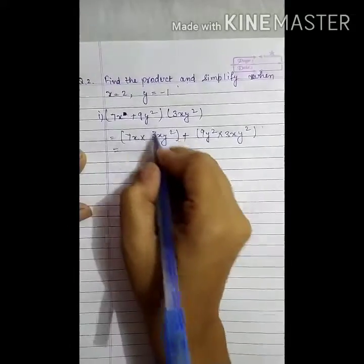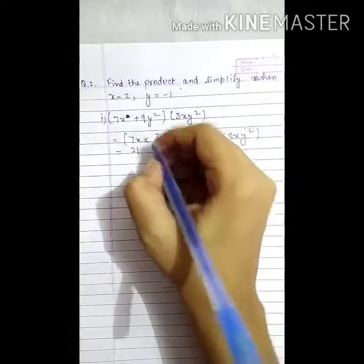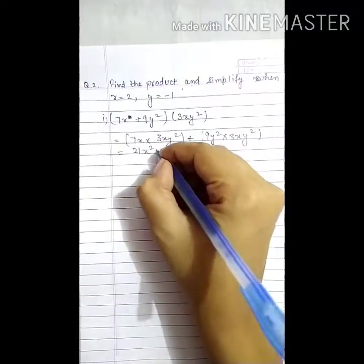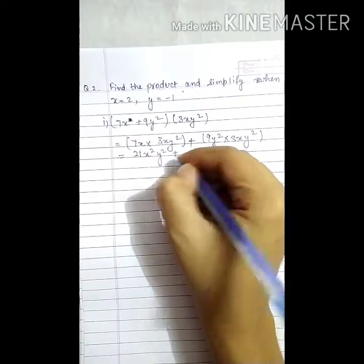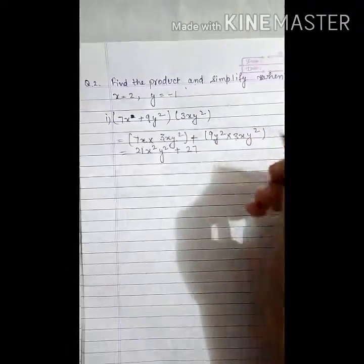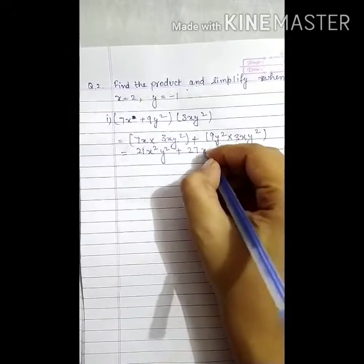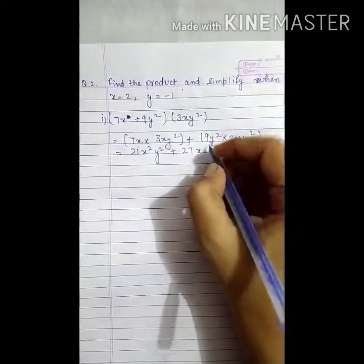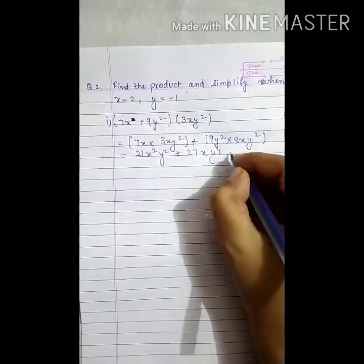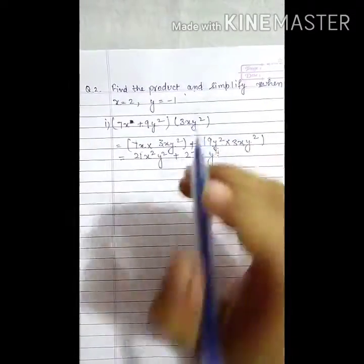7 threes are 21. X multiplied by x is x squared, times y squared. Plus 9 threes are 27, and y squared multiplied by y squared is y to the power 4. So this is the product of the binomial and monomial: 21x squared y squared plus 27xy to the power 4.